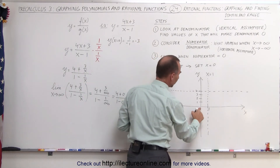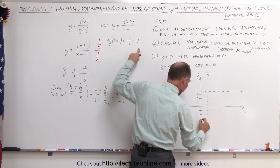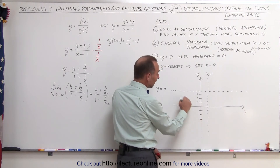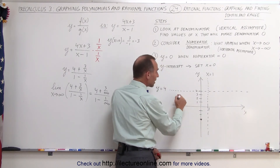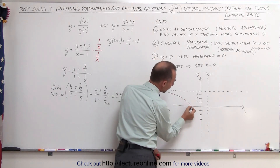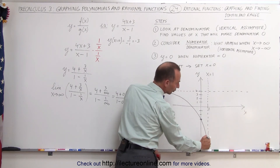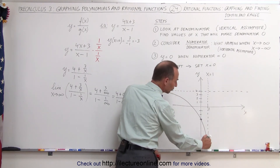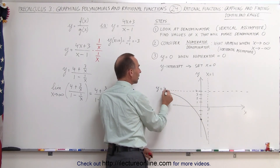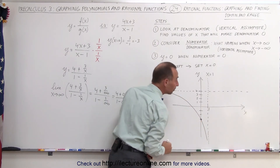Now we know the graph must pass through that point and is bounded by those two asymptote lines. The only possibility is for the graph to curve like this on the left side — it can never cross the vertical asymptote, so it gets closer and closer but never touches it. Over here it gets closer and closer to y equals 4 but never reaches that line. The graph continues forever, approaching but never touching the asymptotes. That's one part of the graph.